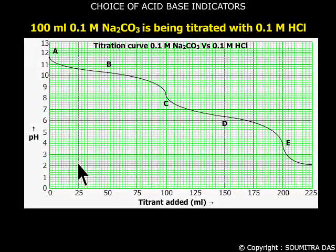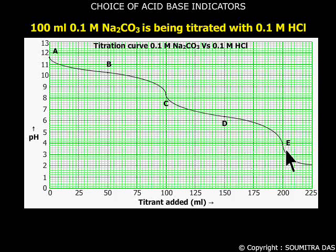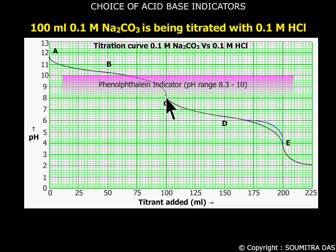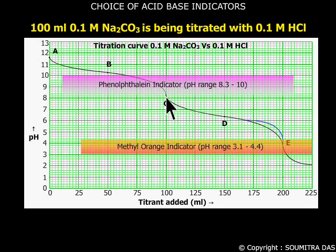This of course does not affect the end point seriously because this vertical part of the curve widens. Therefore, at the first equivalence point phenolphthalein indicator will be suitable and it will only measure half the carbonate concentration. Methyl orange is the suitable indicator at the second equivalence point.